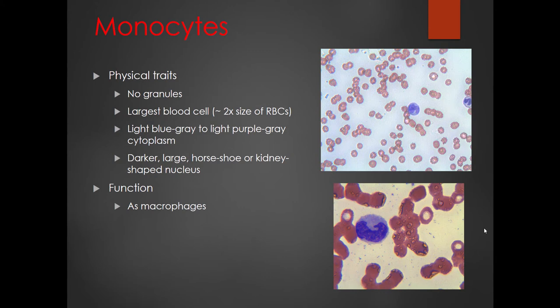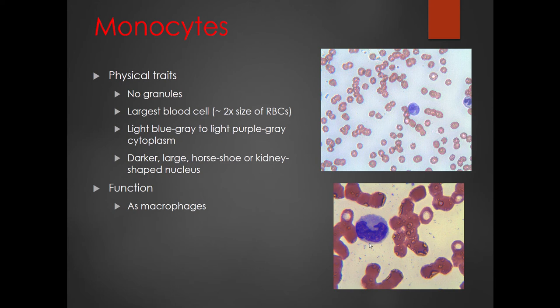Monocytes are one of our agranulocytic white blood cells, so they have no granules. These are the largest of the white blood cells — about twice the size of a red blood cell — by far the biggest formed element visible. They tend to have light blue-gray or purple-gray cytoplasm and big, dark horseshoe or kidney-shaped nuclei. Monocytes function as macrophages: if you get a viral, bacterial, or parasitic infection, or a cancerous cell, macrophages basically glom onto it, suck it in, and eat it.